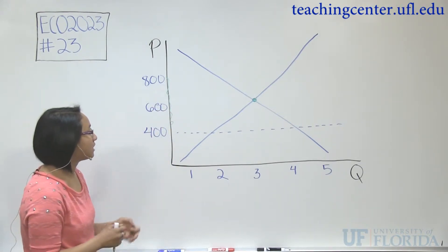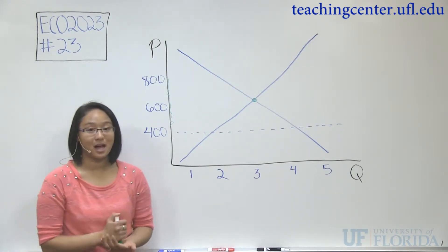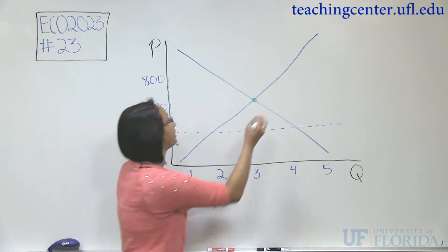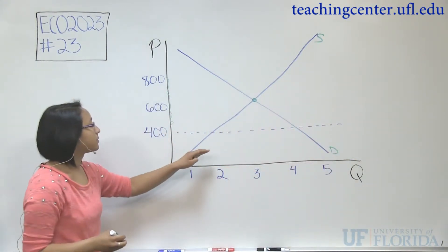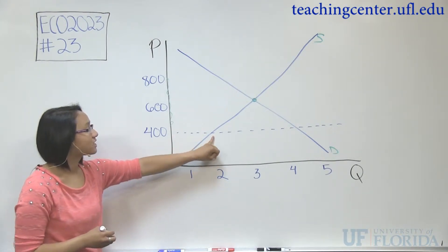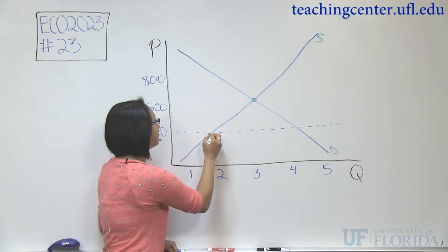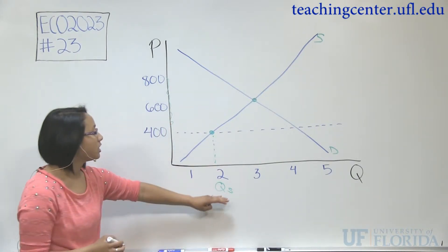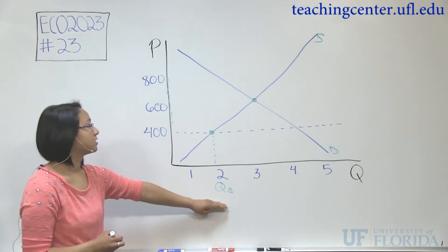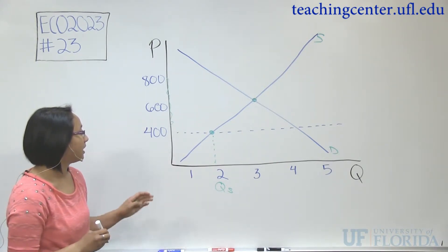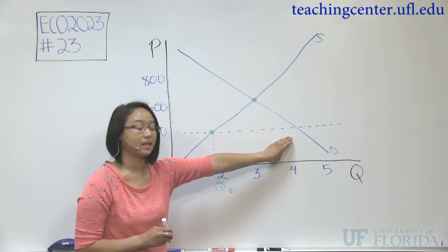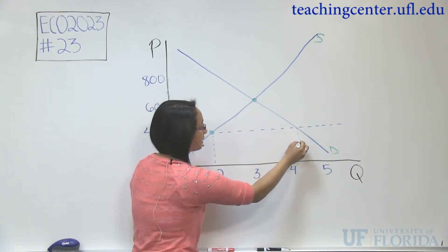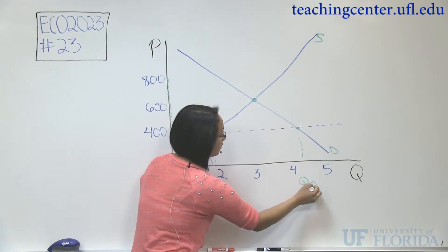This forces the economy to have an unequal quantity of supply and quantity of demand. Here's how you find the quantity of supply. We have our supply curve and our demand curve. Where the supply curve intersects the price of $400, that's the quantity supplied. That line is the quantity supplied — suppliers are supplying 2,000 units of rent. Where the demand curve intersects the price of $400, we have quantity demanded, which is about 4,000.